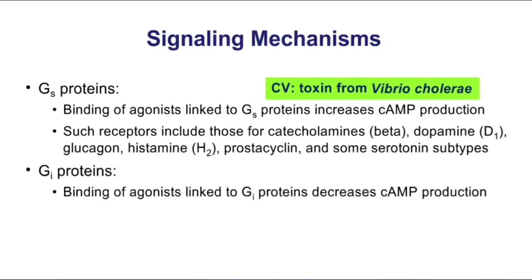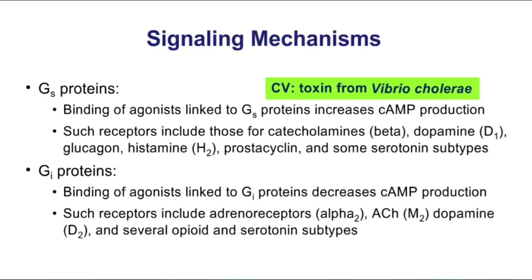GI, on the other hand, are inhibitory G-proteins that are going to inhibit adenylyl cyclase and decrease cyclic AMP — exactly the opposite of GS. When I see that decrease in cyclic AMP through GI-coupled pathways, I'm going to have inhibitory effects on cells. Importantly, receptors that you have to know are GI-coupled: alpha-2, muscarinic M2, and dopamine D2.